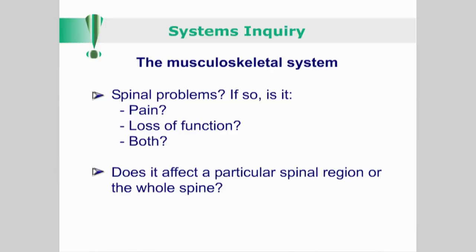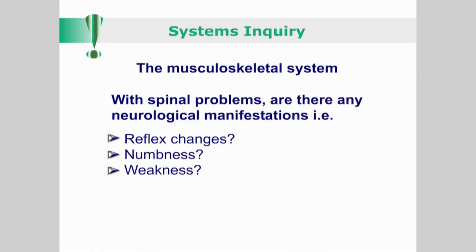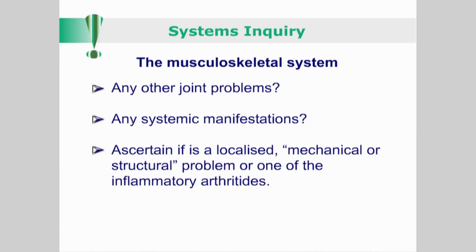Is the patient complaining of spinal problems? If so, are they complaining of pain, loss of function, or both? Does it affect a particular spinal region or the whole spine? Inquire about the chronicity of their symptoms, including onset, regularity, and progression. Are there any objective neurological manifestations like reflex changes, numbness, or weakness? In addition to spinal symptoms, do they have any other joint problems? Are they suffering from any systemic manifestations? With spinal problems, try to ascertain if you are dealing with a localized mechanical or structural problem, or with one of the inflammatory arthritides, and if so, seek for evidence in other parts of the body.